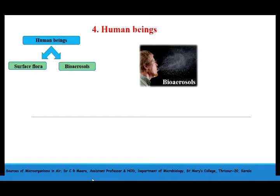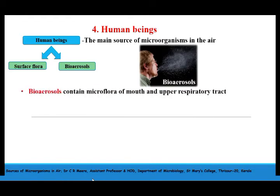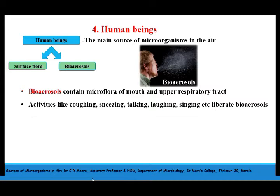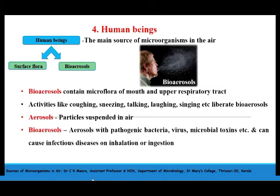Coming to the last but most important source of microorganisms in air: human beings. Human beings are considered the main source of microorganisms in air. Surface flora of the human body is shed at intervals. In addition, human beings also produce bioaerosols which may contain commensal cells as well as pathogenic microflora of the mouth and upper respiratory tract. Activities like coughing, sneezing, talking, laughing, and singing will liberate bioaerosols into air. The particles suspended in air are known as aerosols. Bioaerosols contain biological contaminants like pathogenic bacteria, viruses, and microbial toxins, which on ingestion or inhalation can cause infectious diseases in human beings.